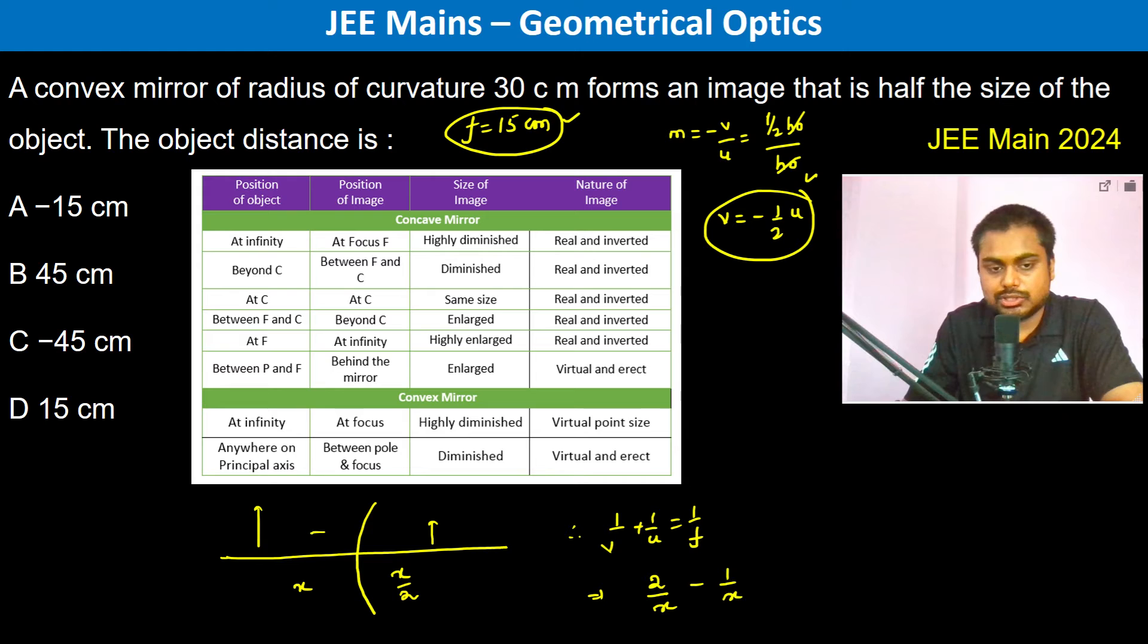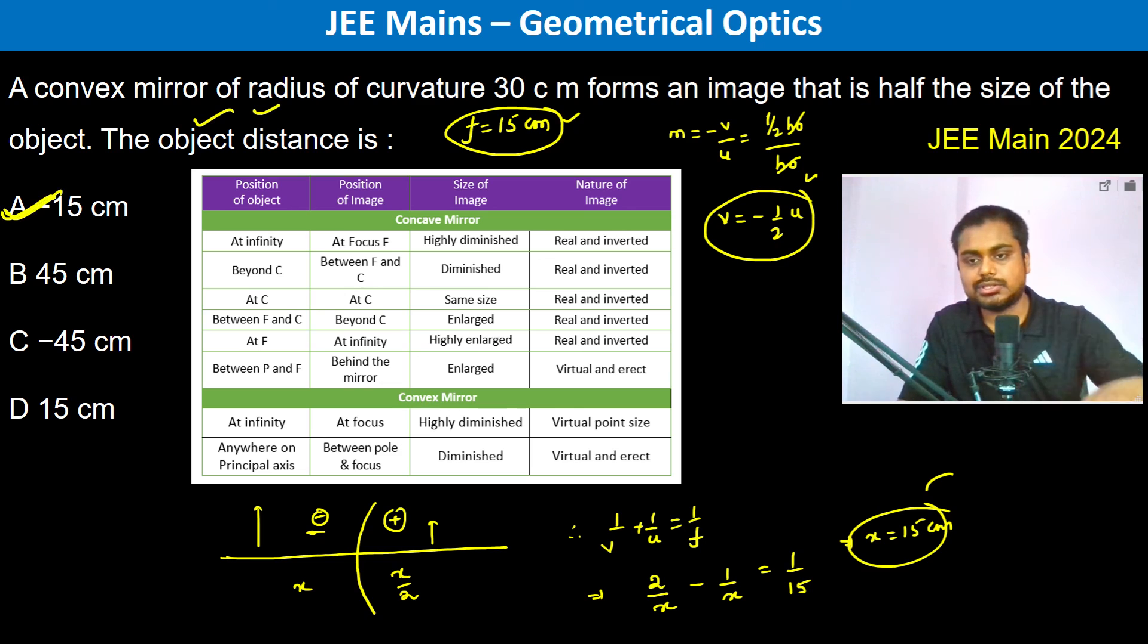It's going to be negative in this direction, positive in this direction. This is equal to 1 by 15. Therefore X is going to be 15 centimeter, and since it is object distance, therefore it is going to be negative. So therefore U is going to be minus 15 centimeter.